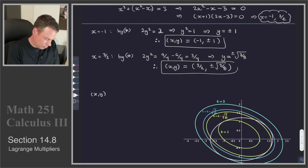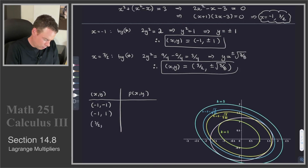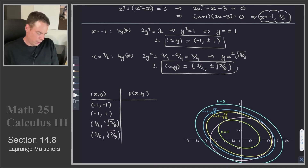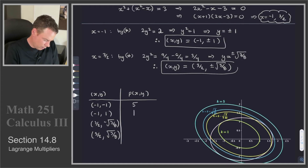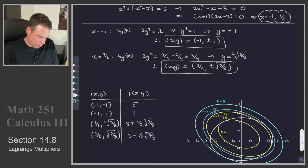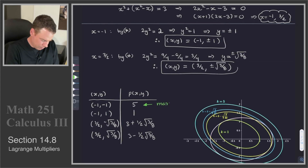We plug each candidate point into our function p(x, y). Evaluating at (-1, -1), (-1, 1), (3/2, -√(3/8)), and (3/2, +√(3/8)), we get function values of 5, 1, 3 minus one-half root(3/8), and 3 plus one-half root(3/8) respectively. Comparing all these values, 5 is the largest — so that's our absolute maximum — and 1 is the smallest — so that's our absolute minimum.